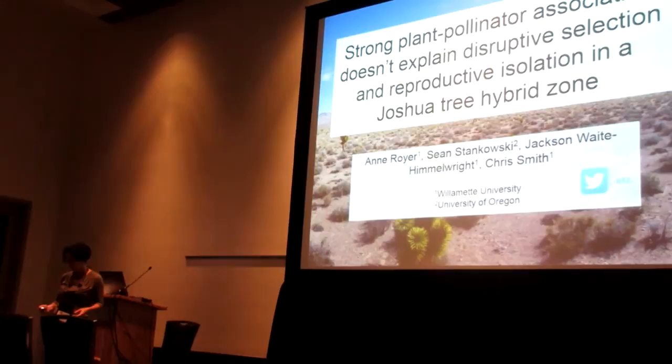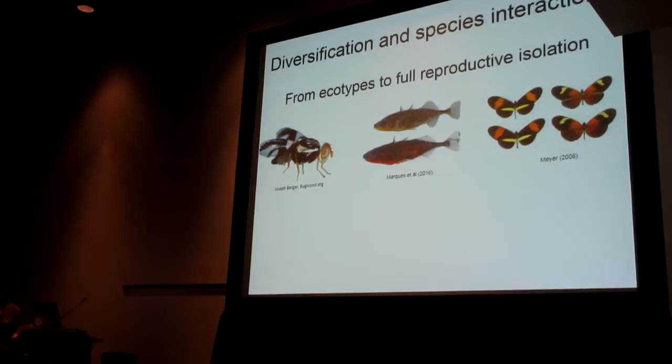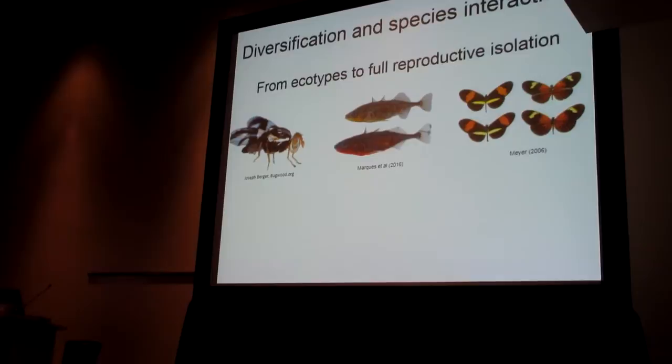Thanks for coming. We're going to talk about hybridization in Joshua trees. We know that interactions between species can contribute to the process of diversification all along the spectrum from local adaptation to full reproductive isolation.